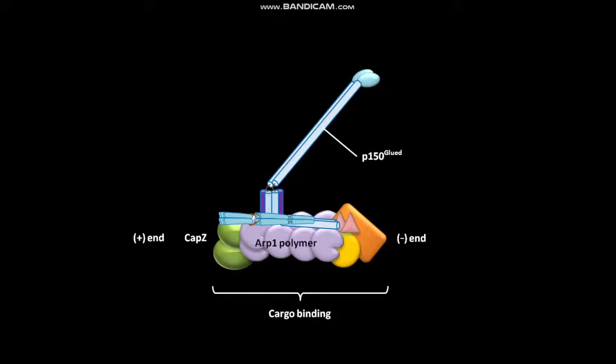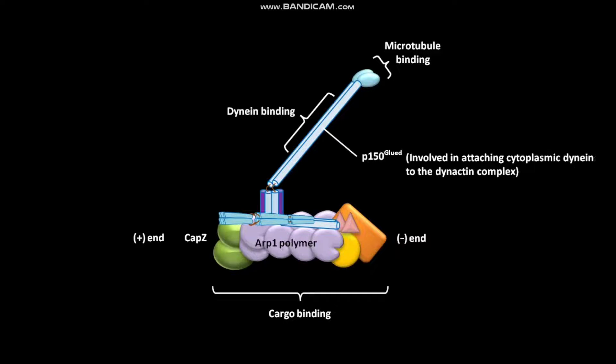The distal end of P150 glued has a microtubule binding site. The protein P150 glued also contains the dynein binding site. The P150 glued is involved in attaching cytoplasmic dynein to the dynactin complex.